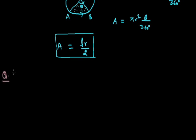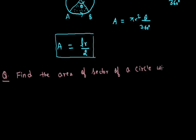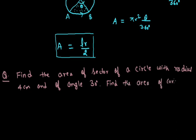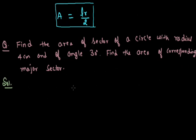First problem: find the area of sector of a circle with radius 4 cm and angle 30 degrees. Also find the area of the corresponding major sector. So radius is 4 cm and theta is equal to 30 degrees.